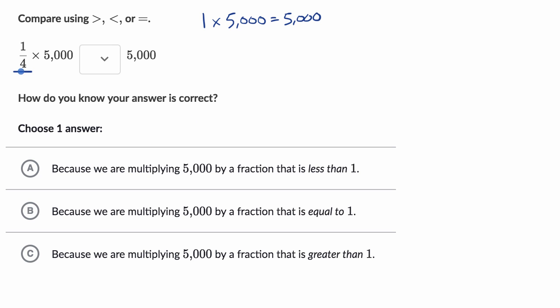But what do you think is going to happen when you multiply a value that is between zero and one times 5,000? Is that going to be greater than, equal to, or less than 5,000?